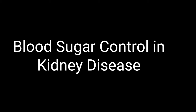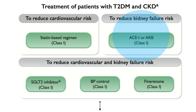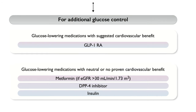Do we have a sequence of preferred drugs in patients with chronic kidney disease? Yes. To reduce cardiovascular risk: statins. To reduce the risk of renal failure: renin-angiotensin system blockers. To reduce both: SGLT2 inhibitors and finerenone. If we need further blood sugar control after using an SGLT2 inhibitor, we can think of a GLP-1 receptor agonist. If more blood sugar lowering is required, we can use metformin if eGFR is more than 30, DPP-4 inhibitors, and of course insulin.